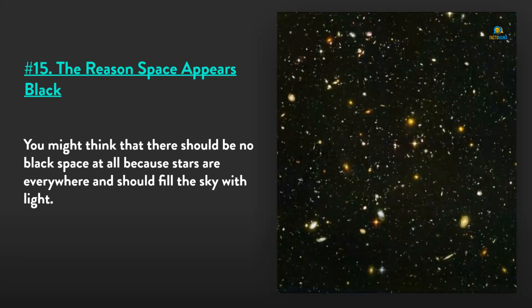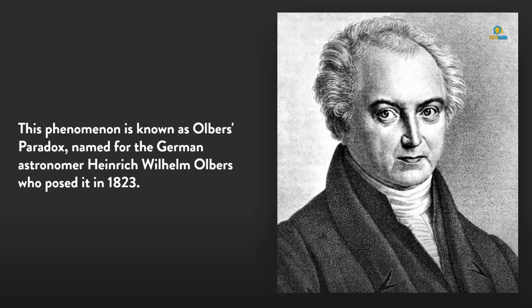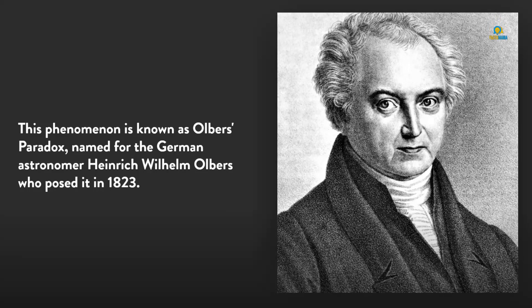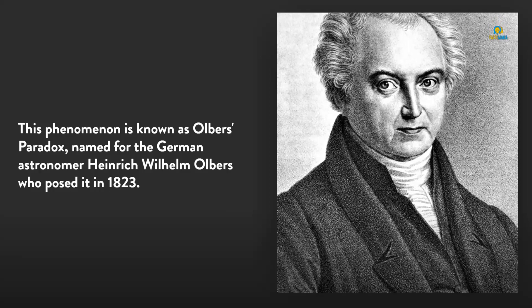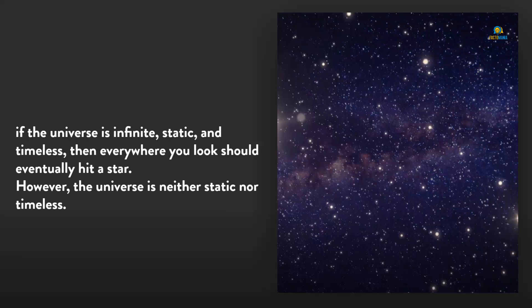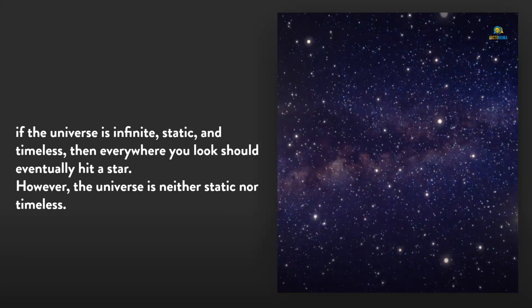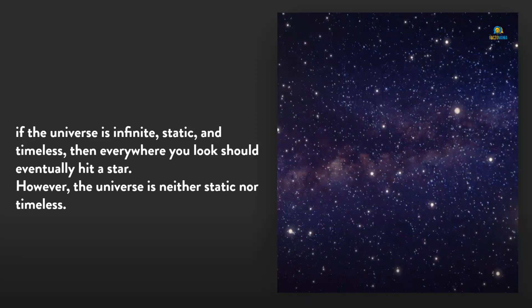Number 15: Why is space black? You might think there should be no black space at all because stars are everywhere and should fill the sky with light. This phenomenon is known as Olbers' Paradox, named after the German astronomer Heinrich Wilhelm Olbers who posed it in 1823. If the universe is infinite, static, and timeless, then every line of sight should eventually hit a star.